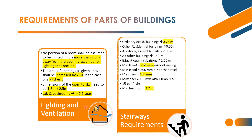Now stairways requirements — staircase. For ordinary residential buildings, minimum width of staircase is 0.75 meters. Other than residential buildings, minimum width of staircase is 0.9 meters. Auditorium, assembly halls, assembly buildings — minimum width of staircase is 2 meters. All other buildings: 1.5 meters. For educational buildings, minimum width of staircase is 2 meters.